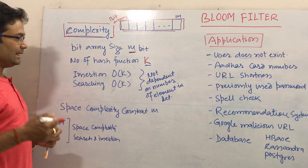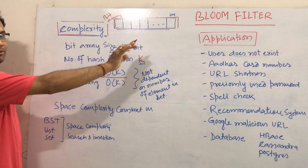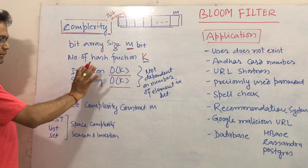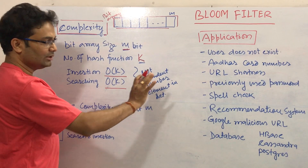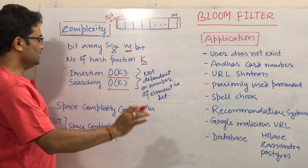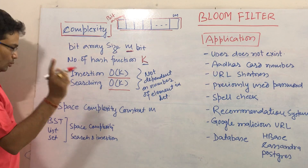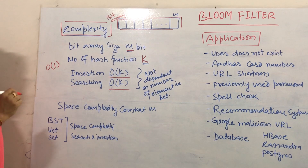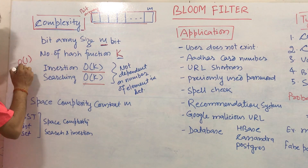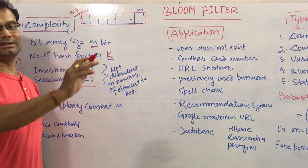So what is the time complexity? If you are going to add an element, it is just O(K), where K denotes the number of hash functions in your Bloom filter implementation. And for searching also, this is O(K). This is always constant and does not depend upon the number of elements in the set. Suppose if you have 10 elements or 10,000 elements, that insertion would always be O(K). If you have implemented the Bloom filter with one hash function, it becomes just O(1).